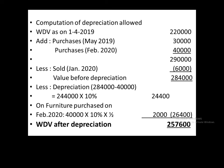Now let us proceed with the computation of depreciation allowed. Written down value as given is 2,20,000. We add purchases: one in May for 30,000 and one in February for 40,000. Total furniture value comes to 2,90,000. After deducting the sale proceeds of 6,000, the value before depreciation is 2,84,000.